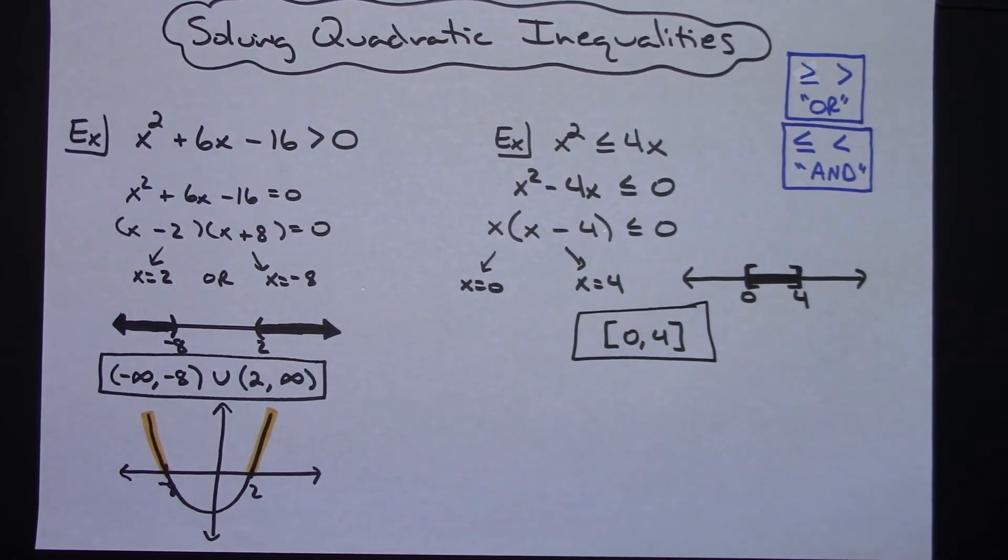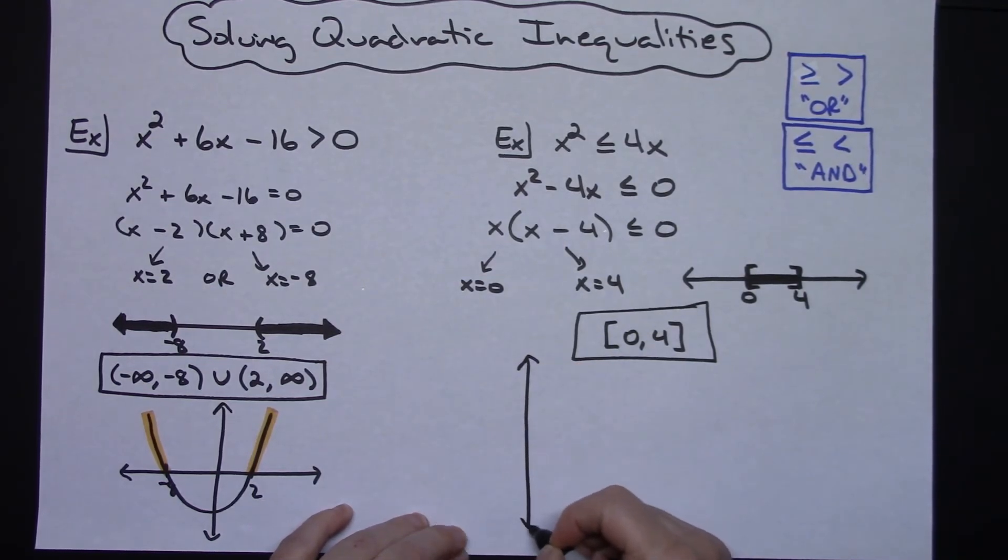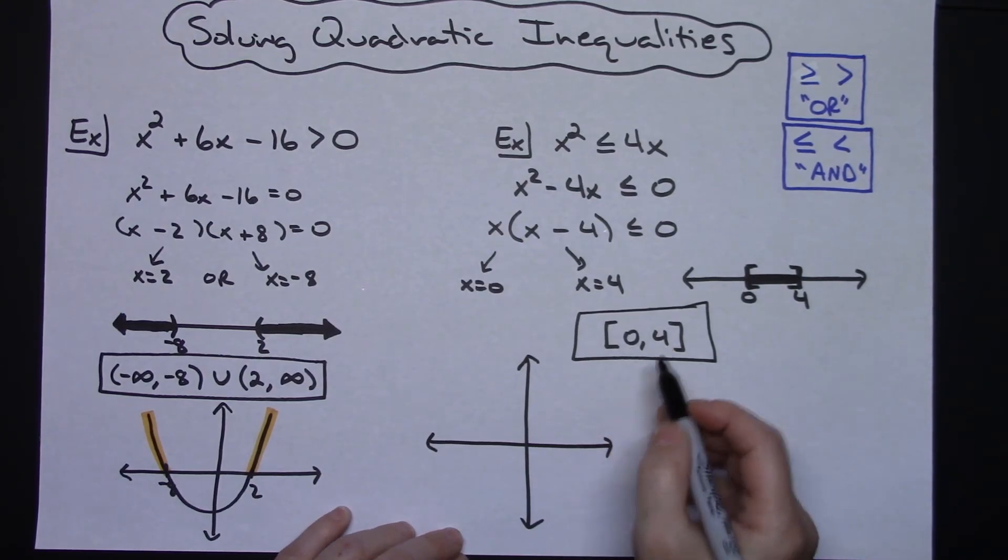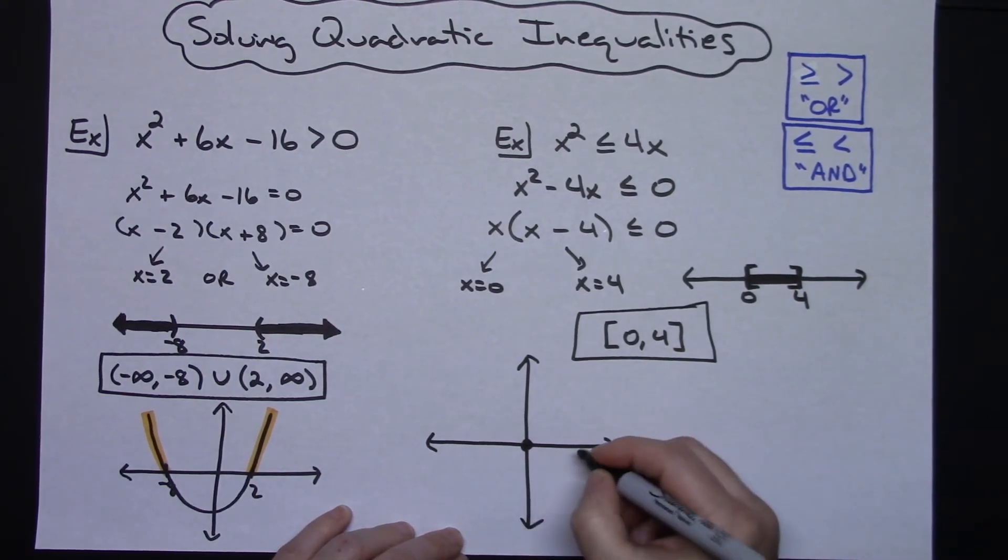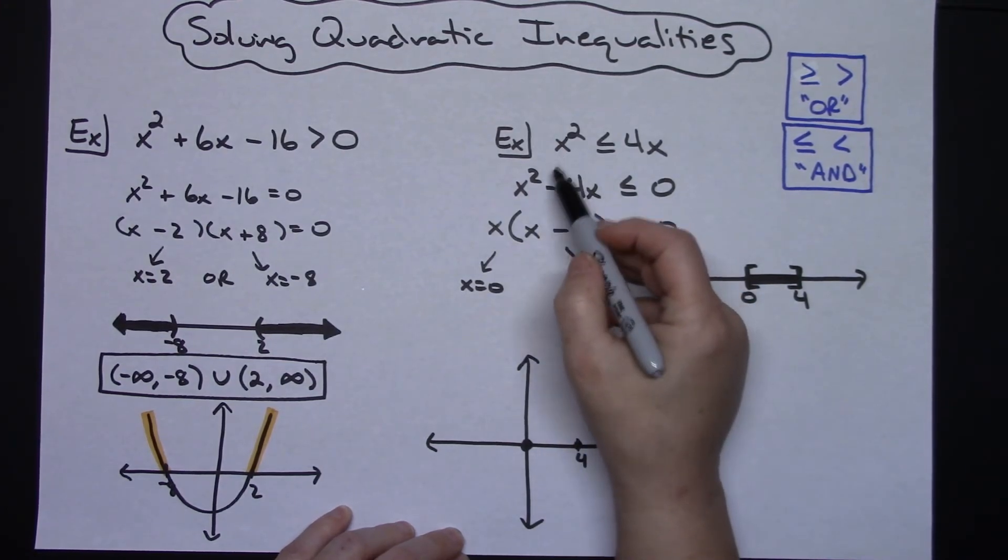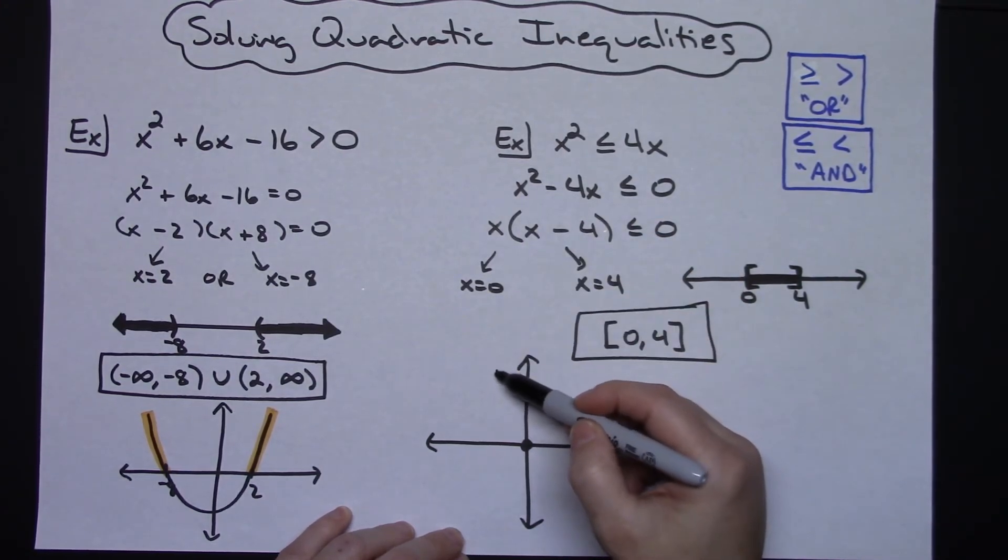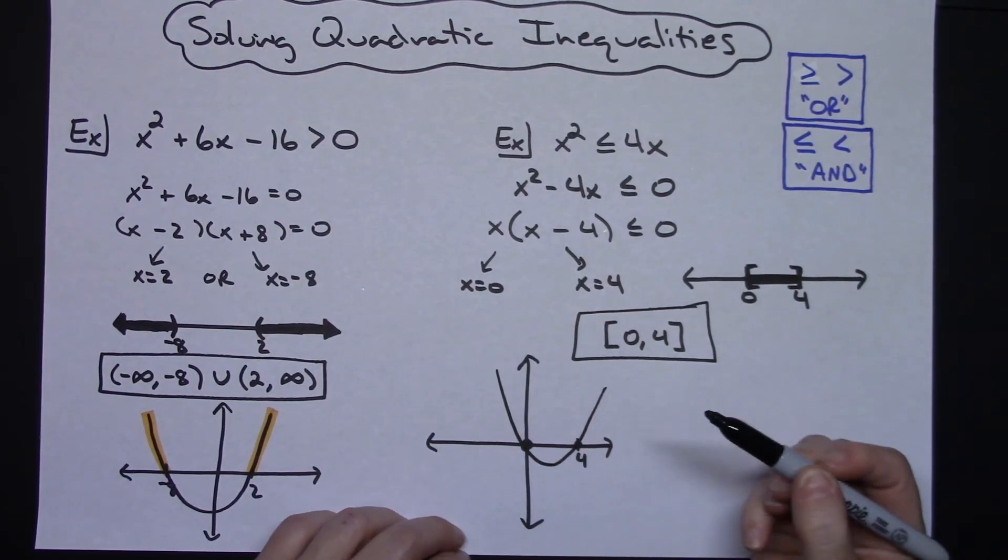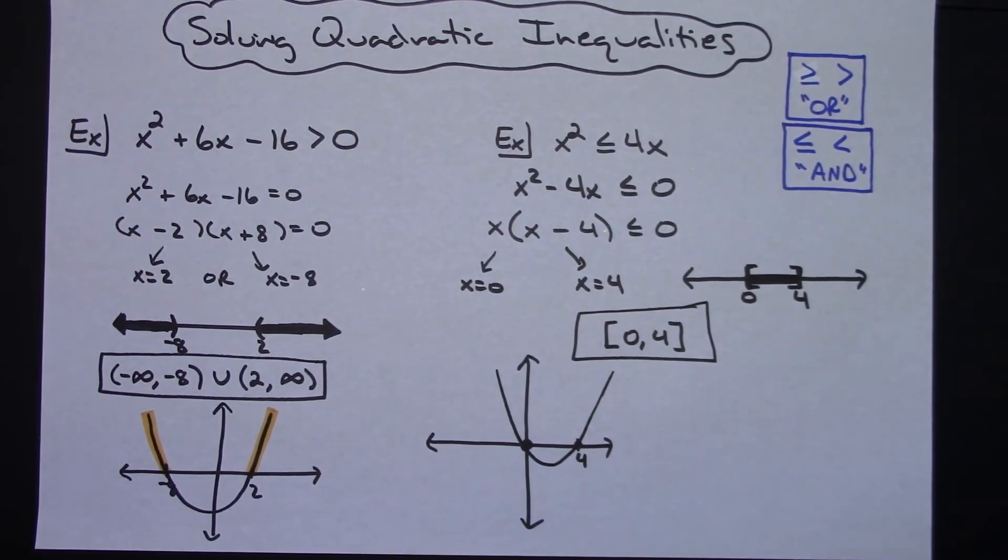Now again if I wanted to take a look at this from a graphical standpoint, we could do a really rough sketch. I know my roots are at 0 and 4. So there's 0 and then here's 4 right there. And again looking at this, it's an upright parabola, so it would look something roughly like that.